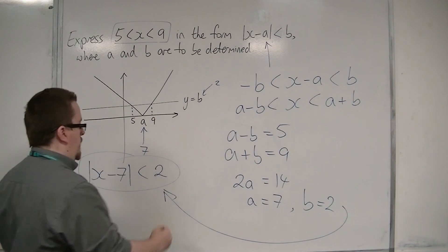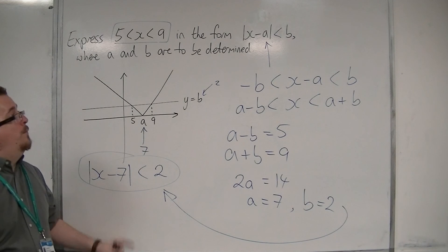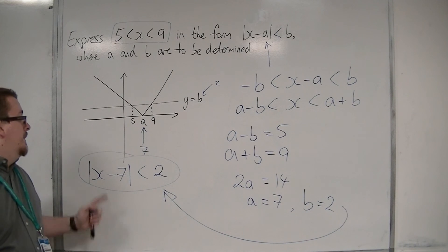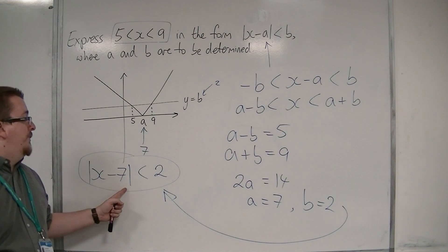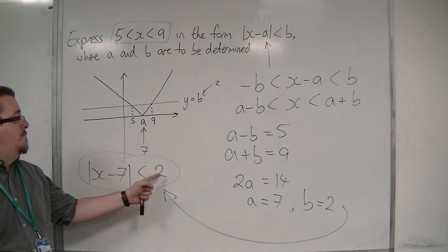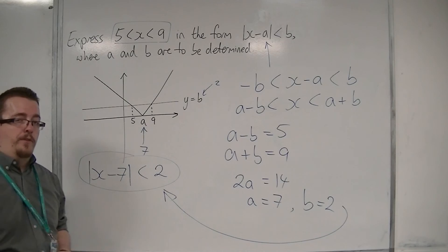So we get the answer in exactly the same format as required: |x - 7| < 2, which is |x - a| < b with a = 7 and b = 2.